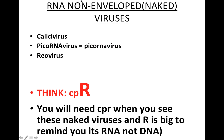Now we're going to look at RNA naked viruses. This lecture series won't focus on naked viruses, but just for organizational sake: think CPR here. We've got calicivirus, picornavirus, and reovirus. I highlighted RNA in the name because that's a good way to remember it's an RNA virus — the letters are right there in the name. CPR tells you the viruses in the naked group. Think: you will need CPR when you see these naked viruses. The big R reminds you it's RNA and not DNA.